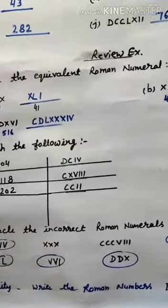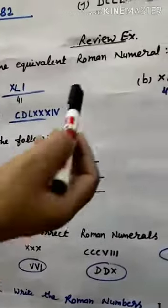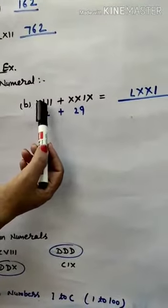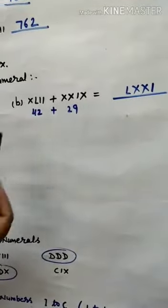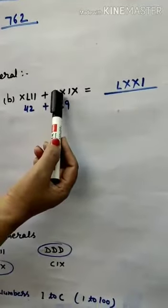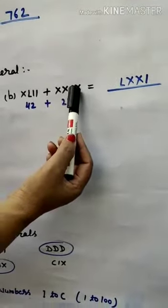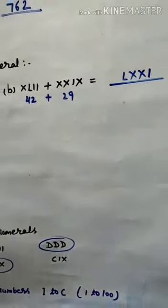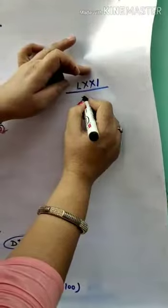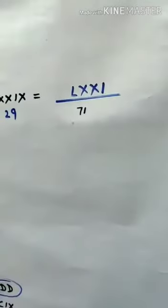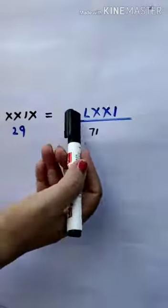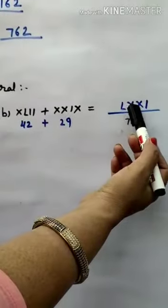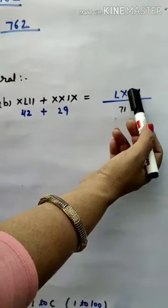Part b: This is also 40 (IX subtracted from L makes 40), plus II gives 42. Then XX is 20 and IX is 9, so that is 29. Adding 42 and 29 gives 71.